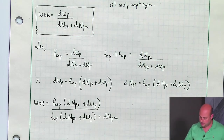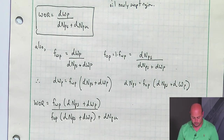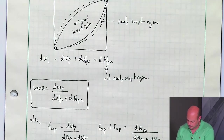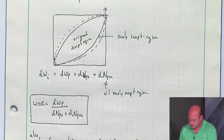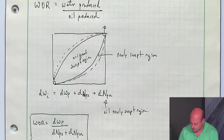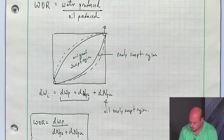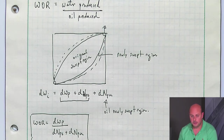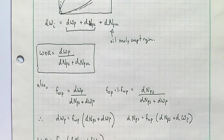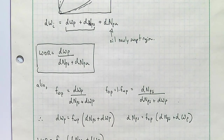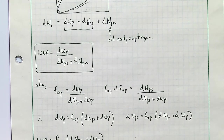We're still not really anywhere close to being useful, but we're moving in the right direction. We have the term DNPS — the oil swept in the previously swept region — and DWP, the water produced. Going back to our original mass balance, DNPS plus DWP equals DWI minus DNPU. So I can substitute DWI minus DNPU in for that term both in the numerator and denominator.